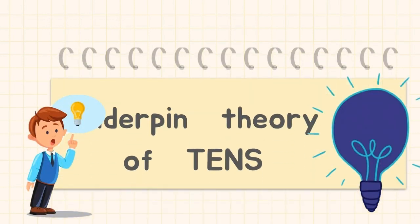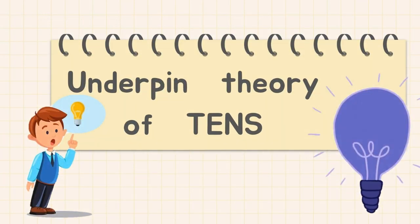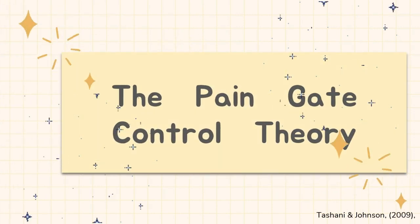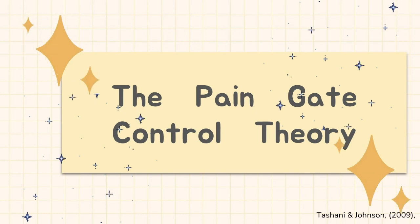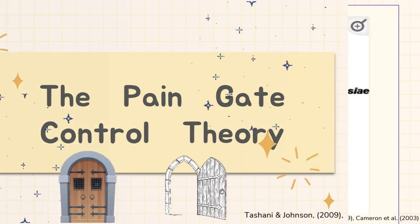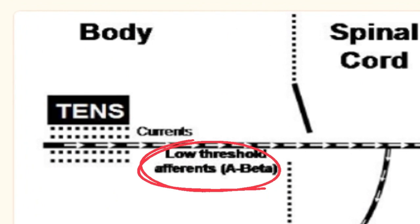TENS is using the pain-gate control theory. According to the gate control theory, the spinal cord has a neurological gate that either blocks or allows pain signals to reach the brain. TENS stimulates the afferent A-beta sensory fibers, which are large diameter low-threshold fibers. It is a mechanoreceptive fiber that is activated by non-noxious stimuli, such as light touch and pressure.